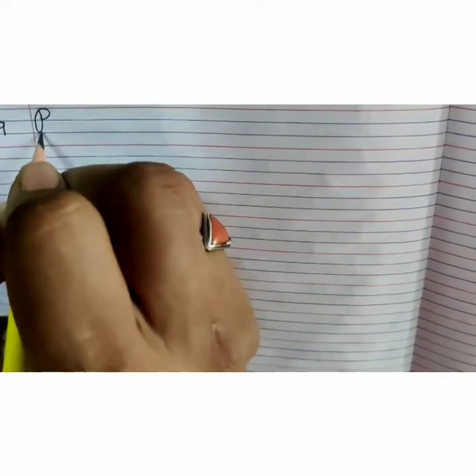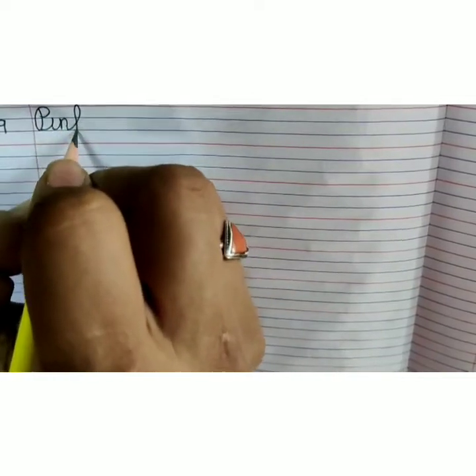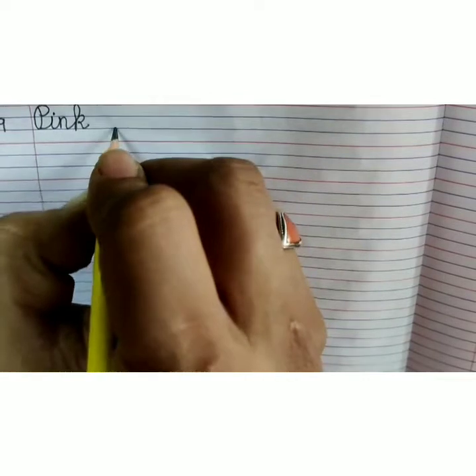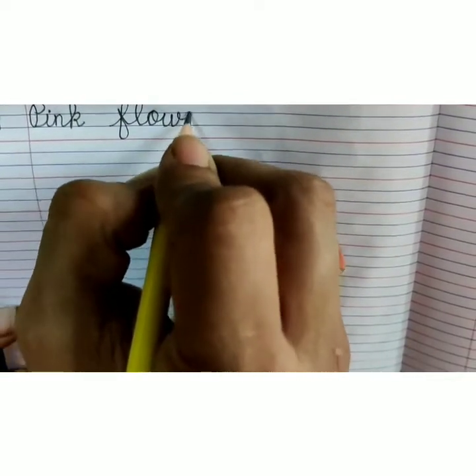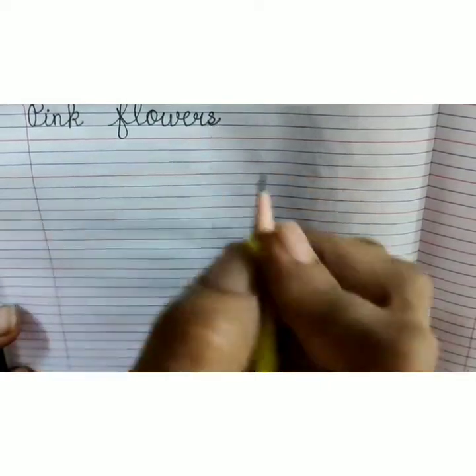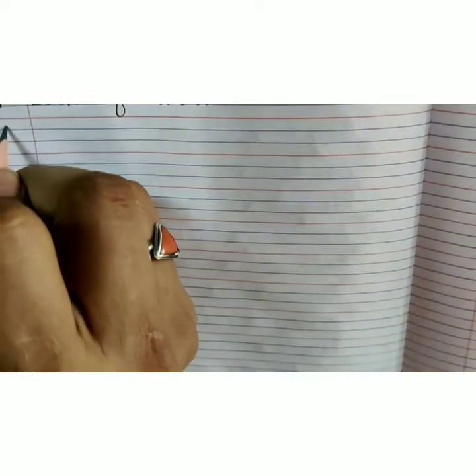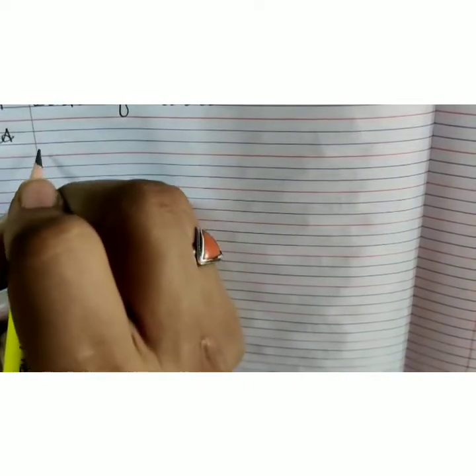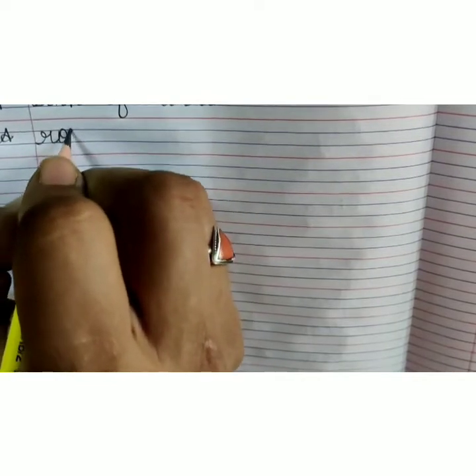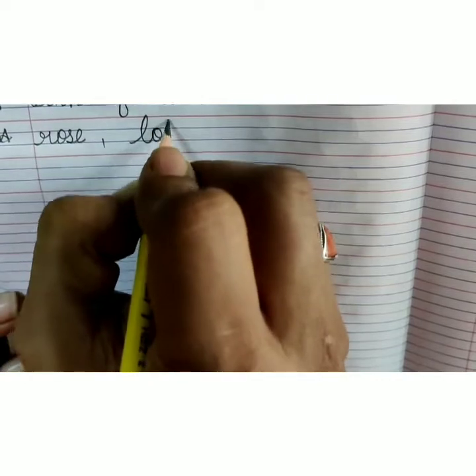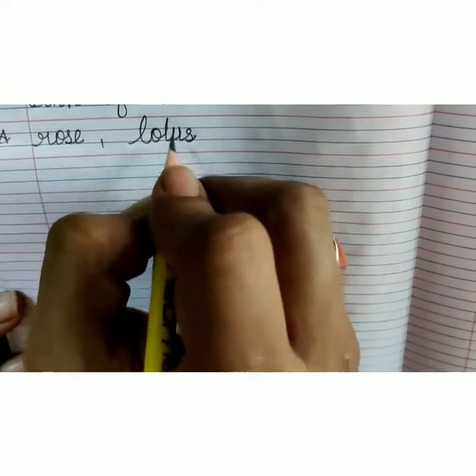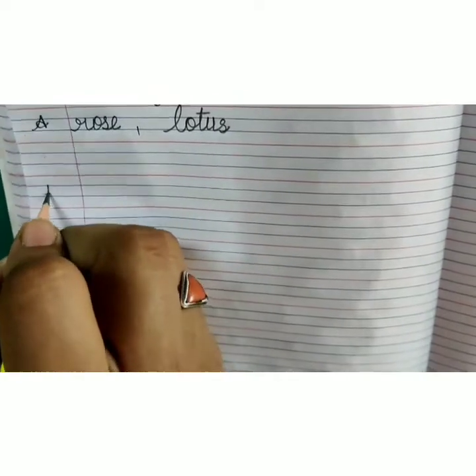Capital P-I-N-K, pink, F-L-O-W-E-R-S, flowers, pink flowers. Answer: R-O-S-E, rose, comma, L-O-T-U-S, lotus. Now leave one line, write number 10.